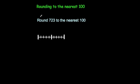In this video we're going to look at rounding numbers to the nearest 100. Here's a practice question: round 723 to the nearest 100. So if this was 700 and this was 800, then in the middle would be 750.